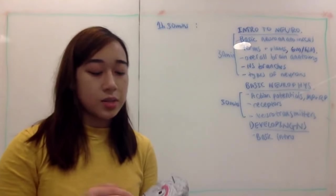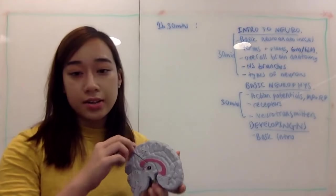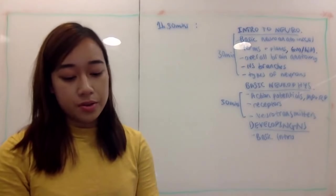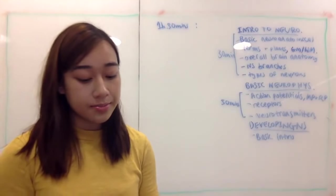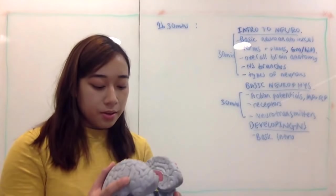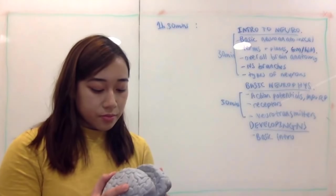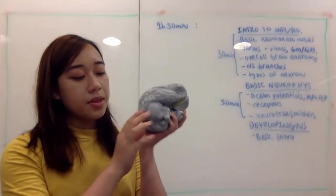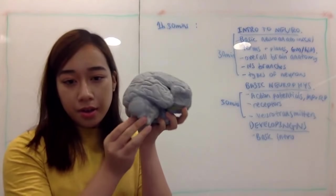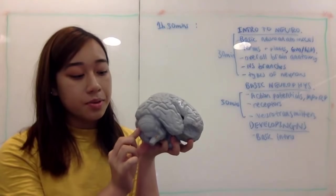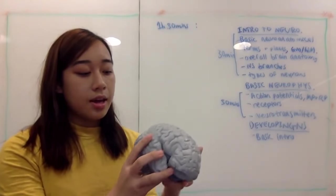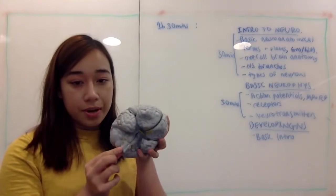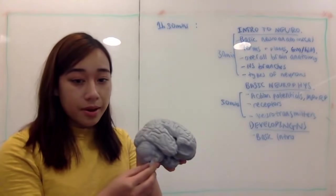The cortex is just the outer layer of the cerebrum. This is the cerebrum, this is the cerebellum, and then you have the rest of the brainstem here.